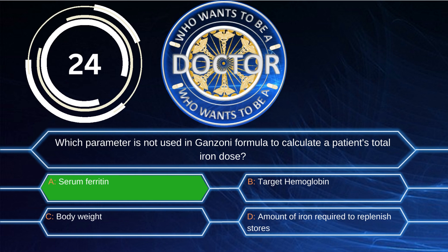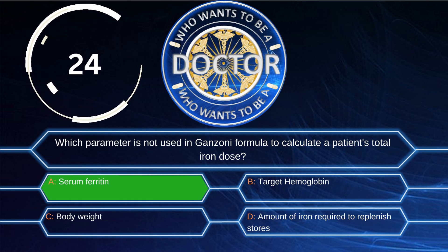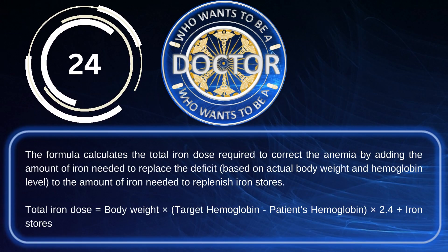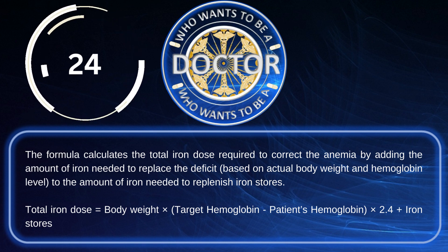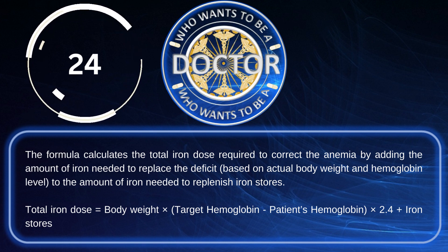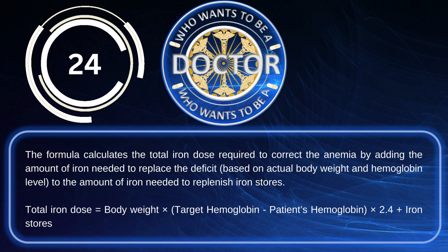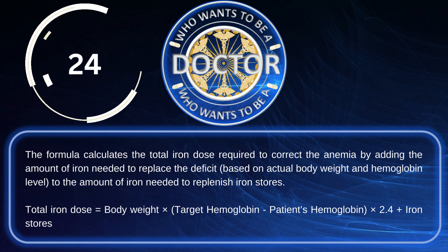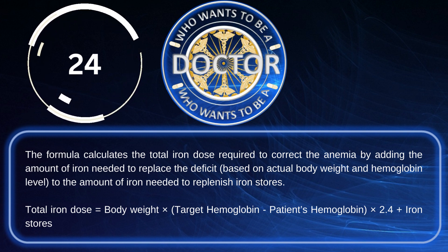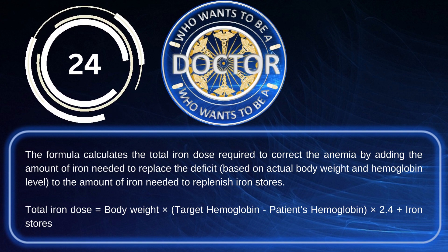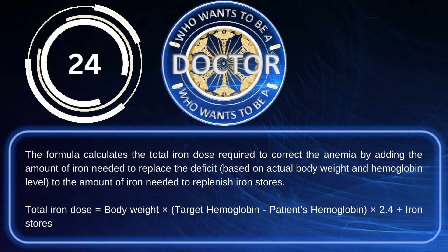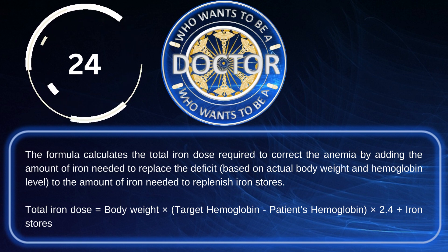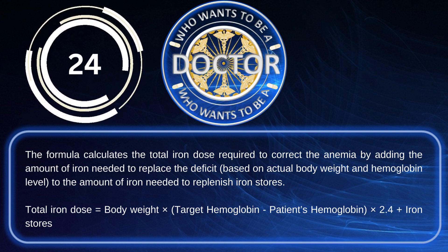The correct answer is Option A: Serum ferritin. The Ganzoni formula calculates the total iron dose required to correct anemia by adding the amount of iron needed to replace the deficit, based on actual body weight and hemoglobin level, to the amount of iron needed to replenish iron stores.